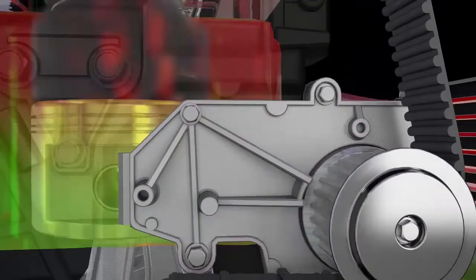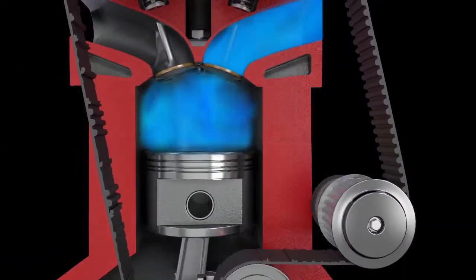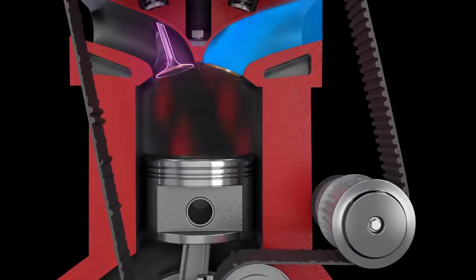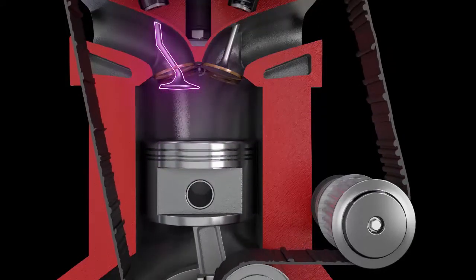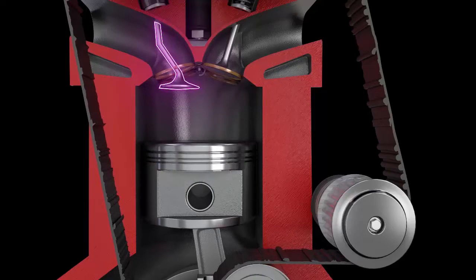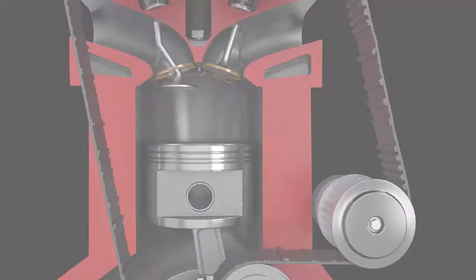Because the timing belt keeps the engine's intake and exhaust valves in sync with the pistons, a water pump failure often results in an engine valve being in the open position when the piston moves upwards, resulting in bent engine valves.